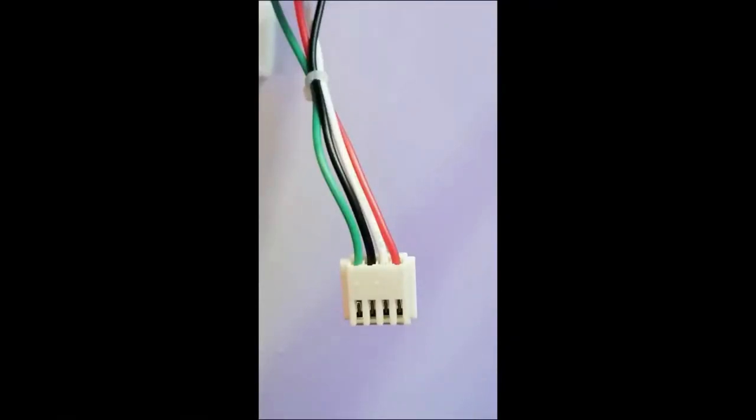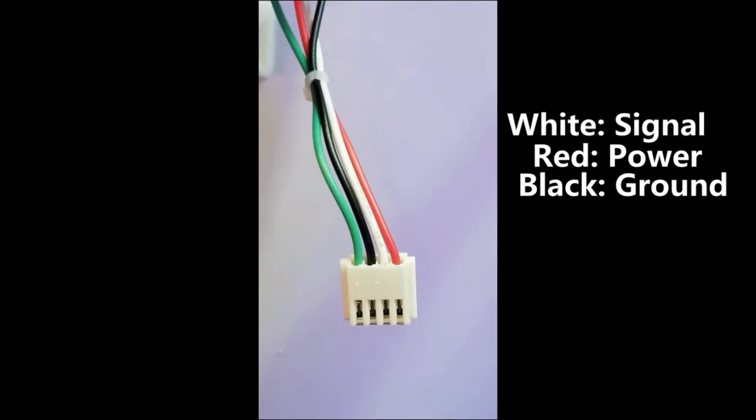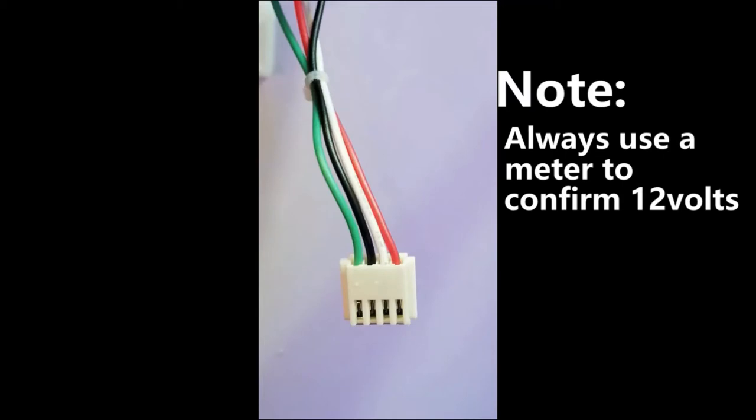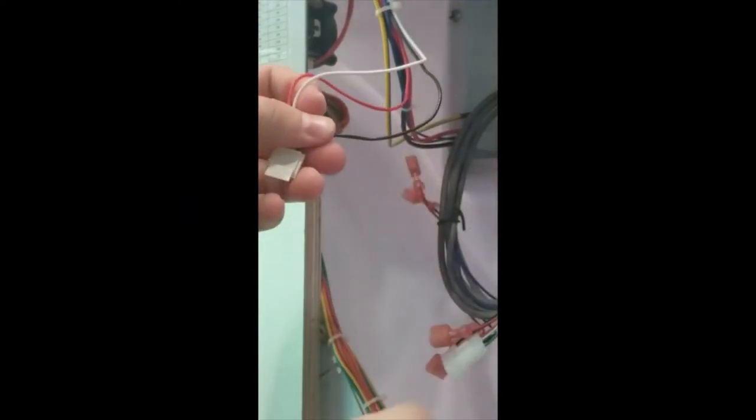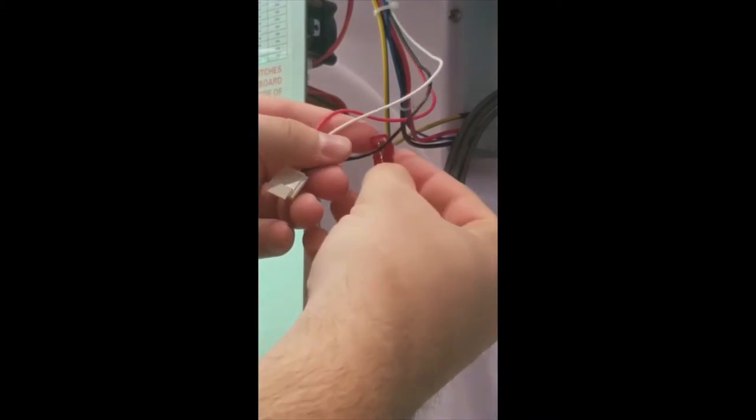On any newer game, you will likely find all of the wires you need inside of the coin door. A game that has an electronic coin mech will likely have a connector just like this one. Intercard readers need 12 volts to operate, so always use a voltage meter to confirm that you have 12 volts. Also note that these wire colors can change with any game.